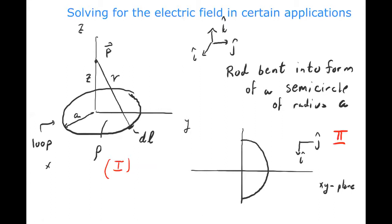The semicircle has radius A. This is the angle phi in plane polar coordinates. The difference between the circular loop problem and this semicircle problem is that phi, the azimuthal angle, is going to go from zero to pi in figure two, whereas in the previous problem it went from zero to two pi. That's really the main difference in the problem, but even that subtle change is going to produce a difference in what's going on.